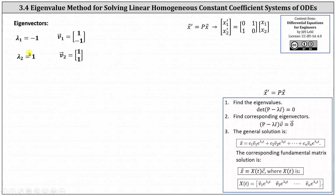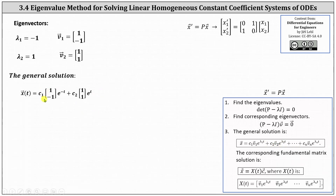Now that we have the eigenvalues and corresponding eigenvectors, we can determine the general solution. The general solution is x of t equals c one times vector v one times e to the power of lambda sub one t, plus c two times vector v two times e to the power of lambda sub two t. Therefore the general solution is x of t equals c one times the vector [1, -1] times e to the power of negative t, plus c two times the vector [1, 1] times e to the power of t.